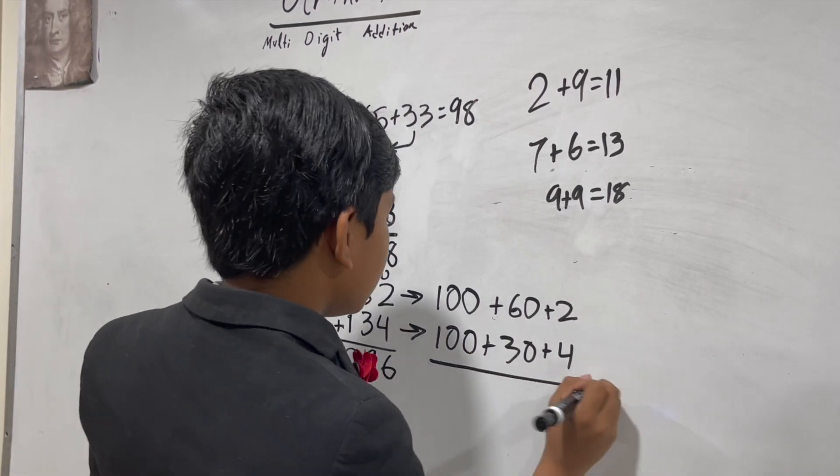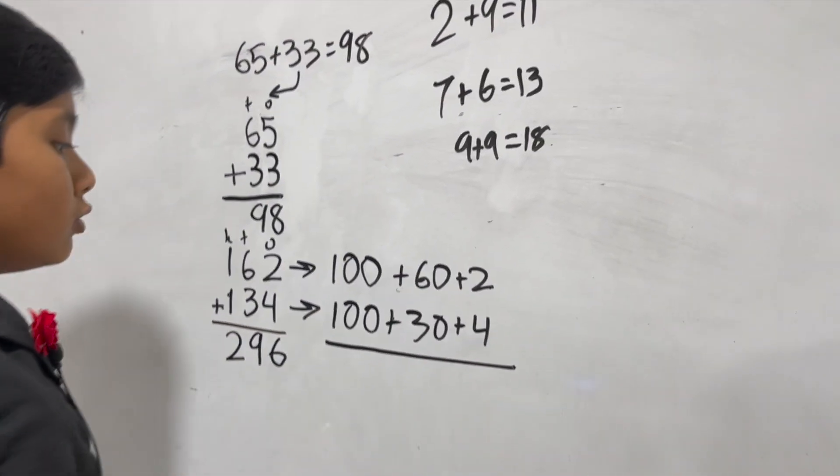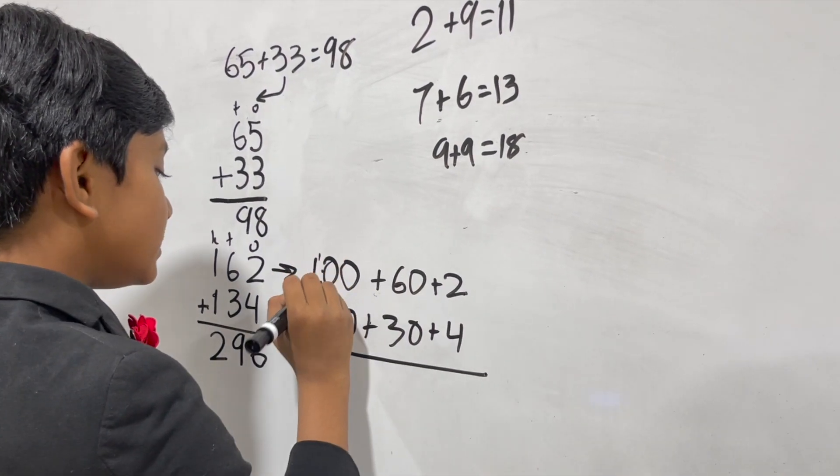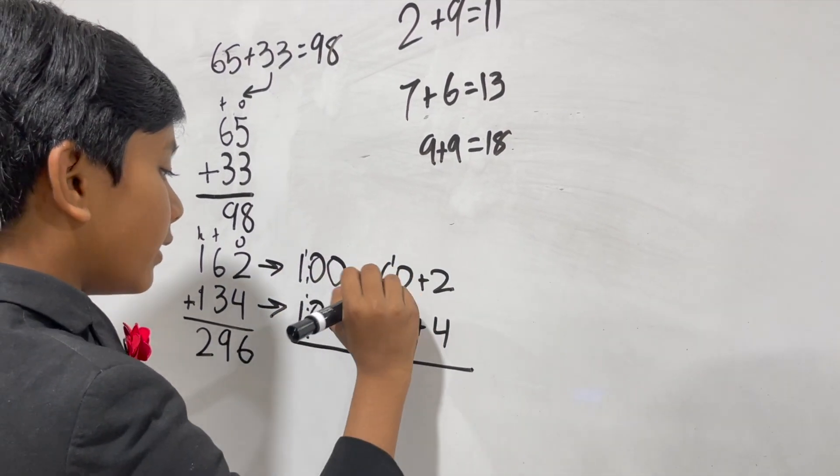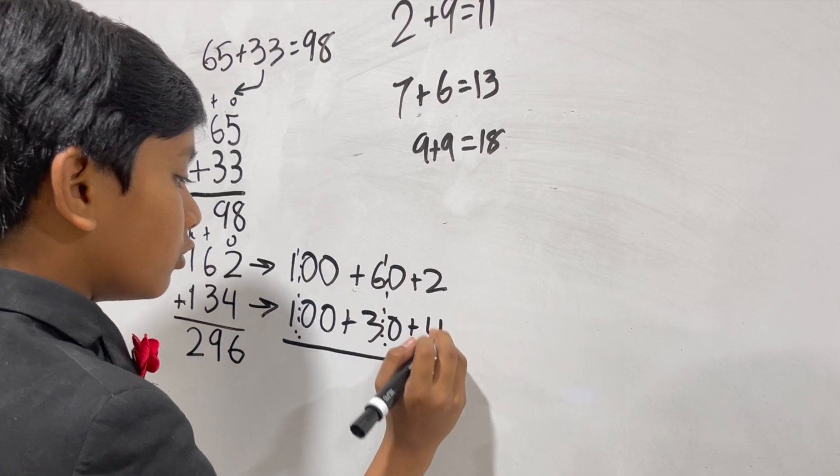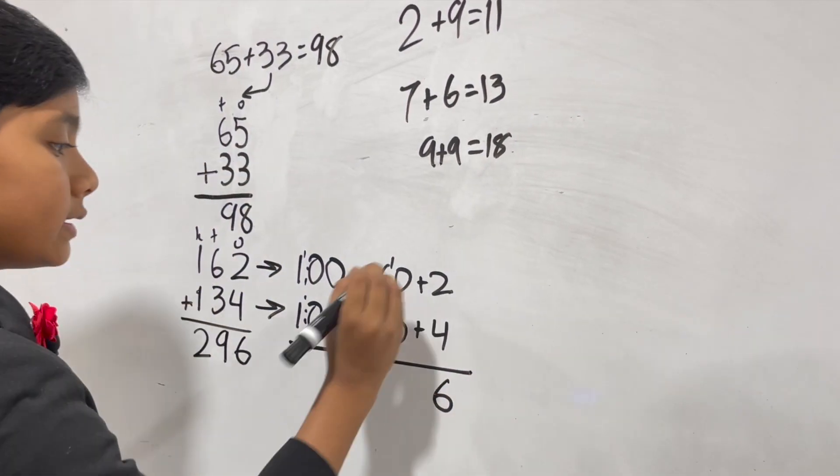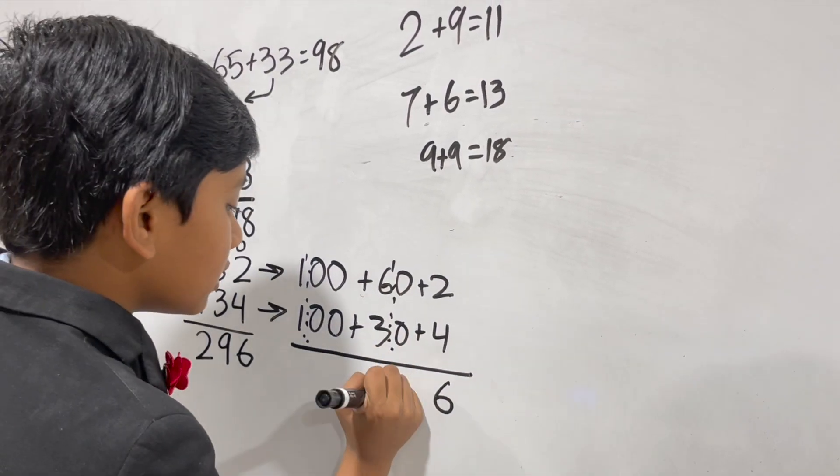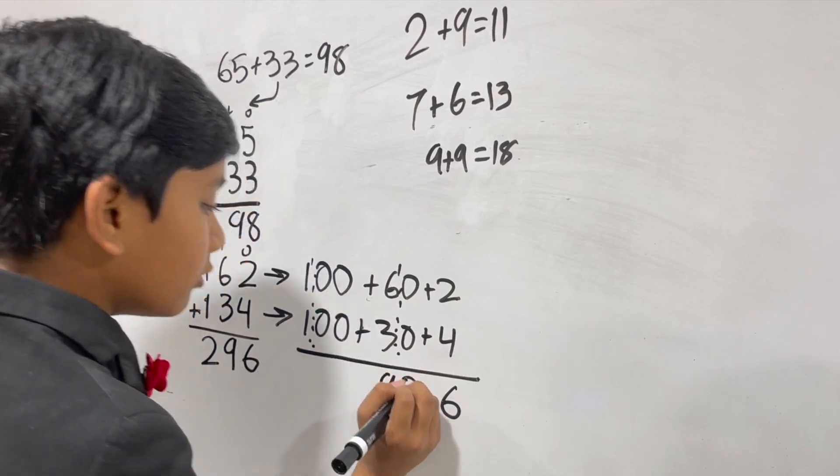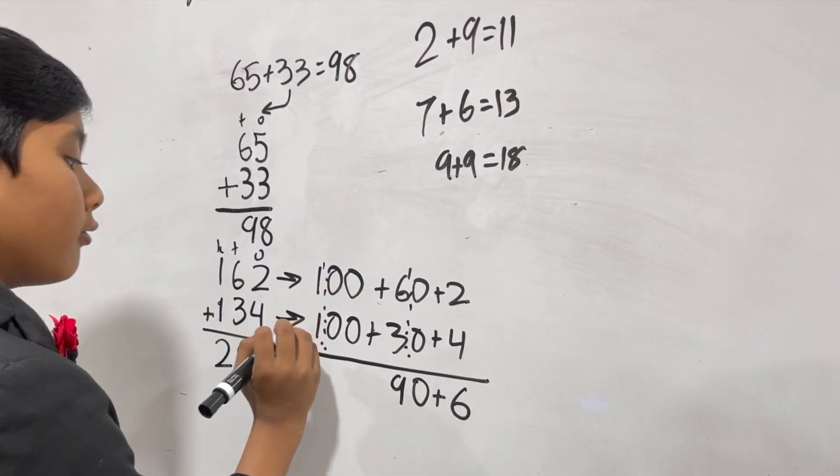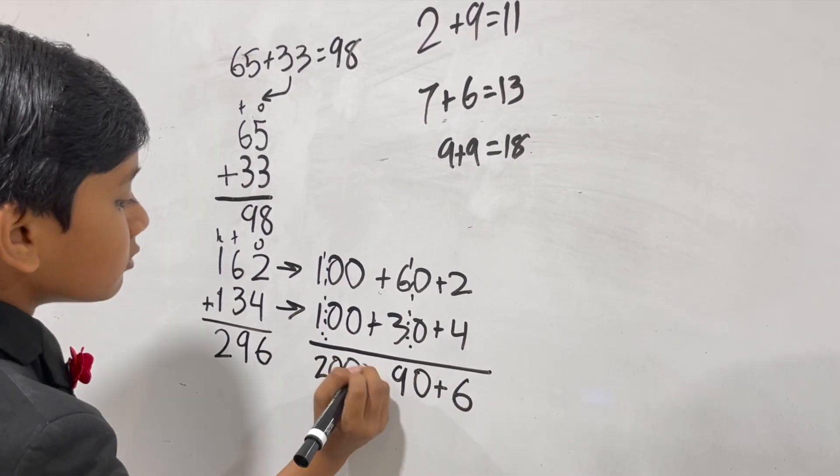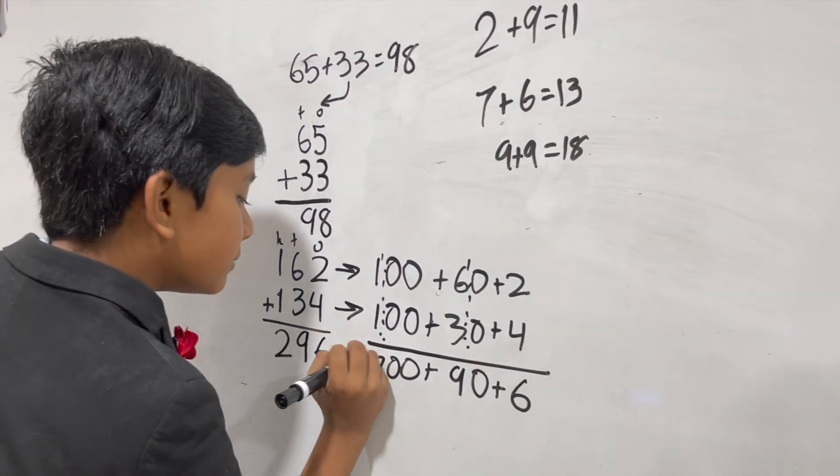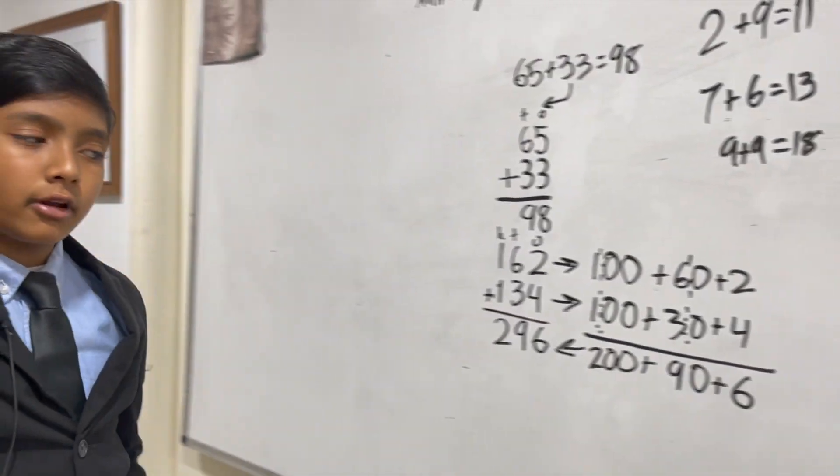Now these zeros don't really do anything when we add them, so we can essentially cut them out of the equation. So the 2 and 4 become 6. The 60 and 30 become, well, 6 plus 3 is 9 and then you add the zero. And then the 1 and 1 is 2 and you add the two zeros, 200 plus 90 plus 6, which is 296.